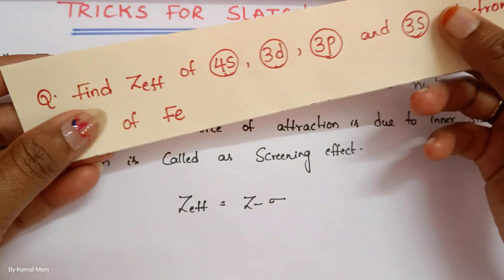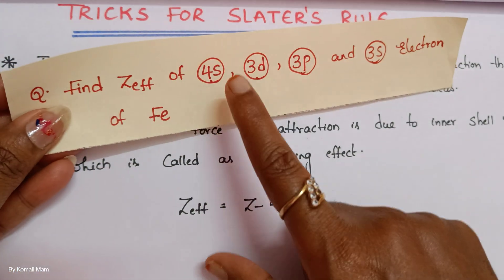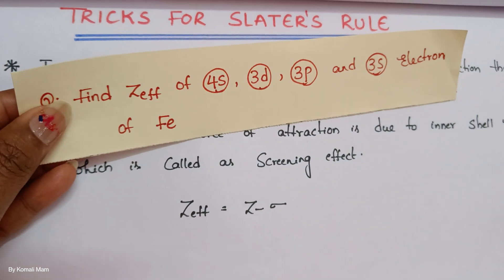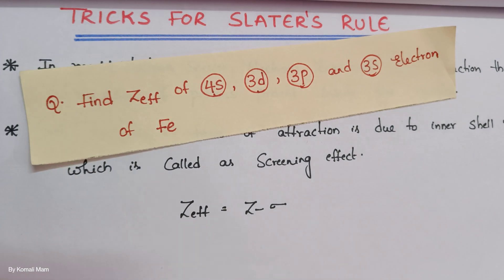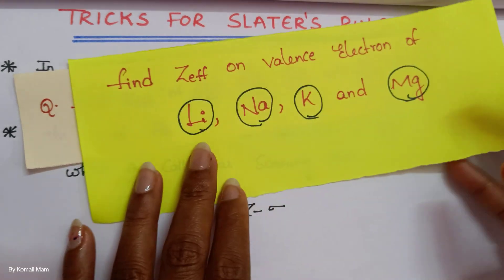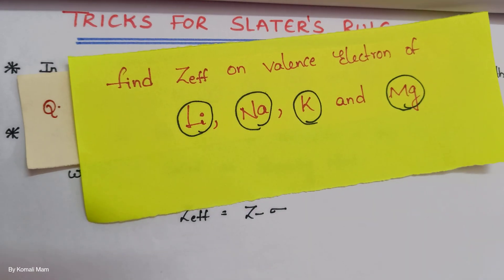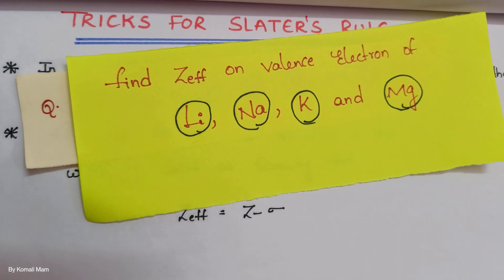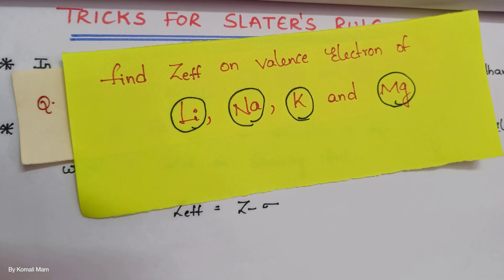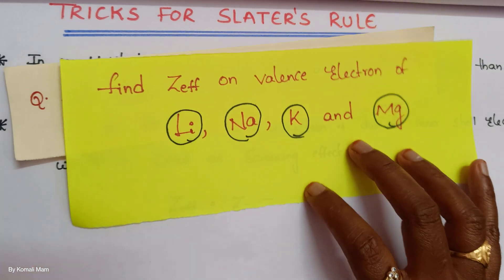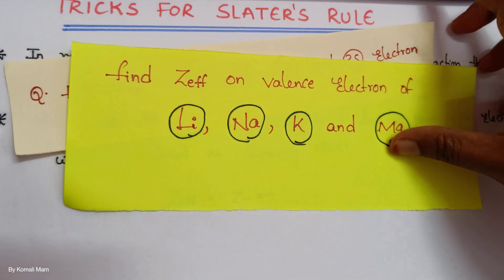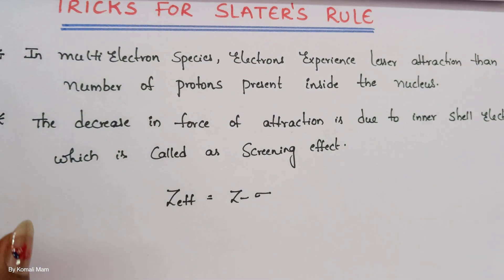For example, whether they ask for a 4S electron, 5D electron, 3P, 3S — anything they ask. Let them ask for lithium, sodium, potassium — anything they can ask. You will solve without doing a single mistake from this particular topic. Let us begin the session.